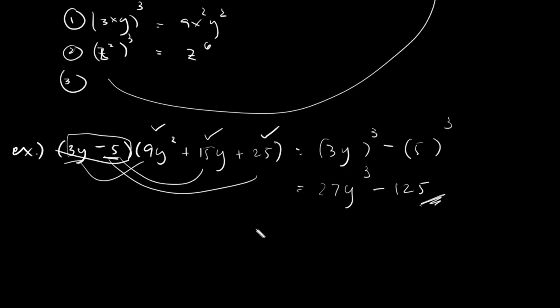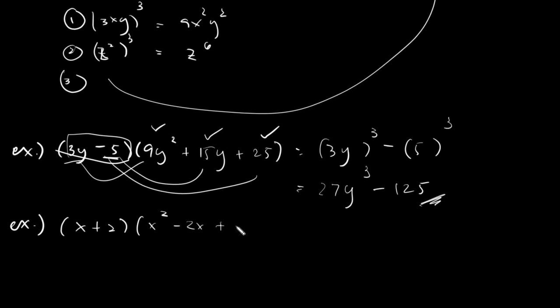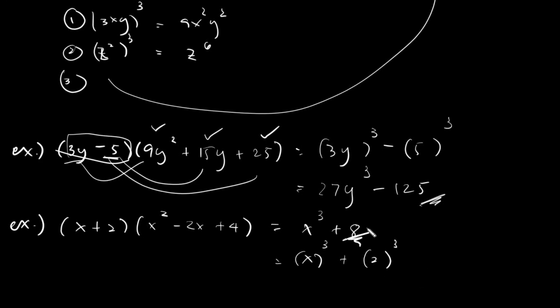Let's have one last example — the very famous (x + 2)(x² − 2x + 4). The answer here would be x³ + 2³, which equals x³ + 8. That's your final answer. I hope you got something from our tutorial today. Thank you everyone for listening. Assalamualaikum Warahmatullahi Wabarakatuh.